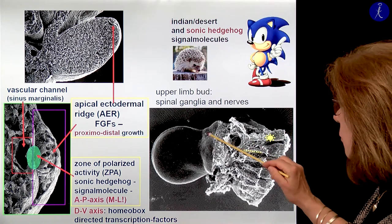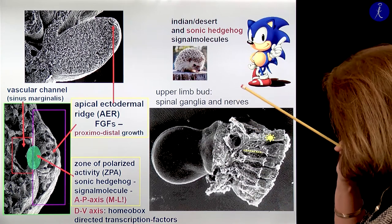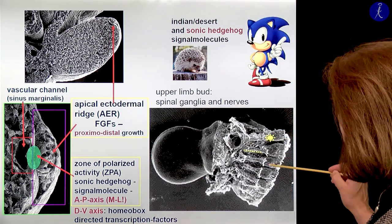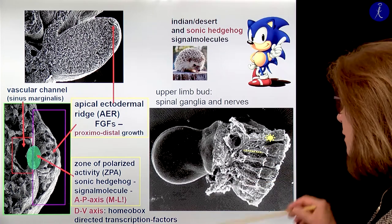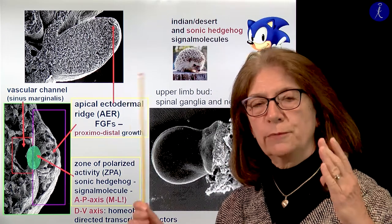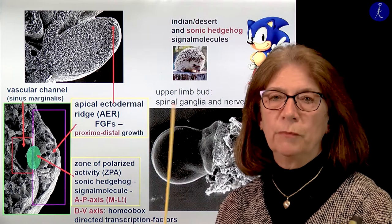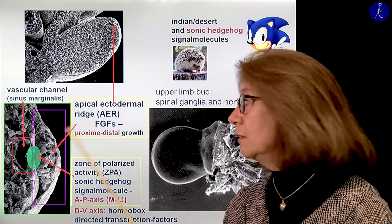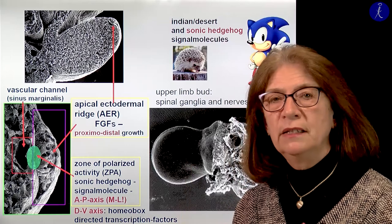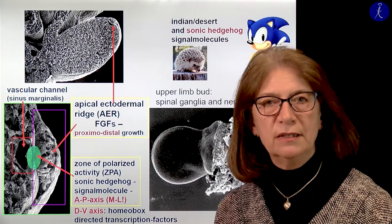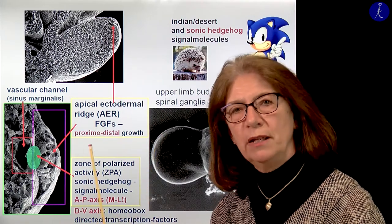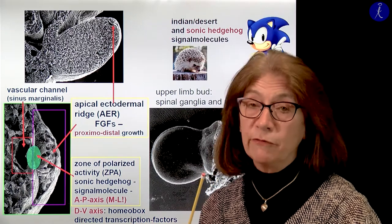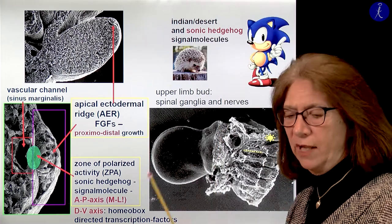Here we see an upper limb bud — a nice round shape removed from the embryo together with the spinal ganglia and spinal nerves: C5, C6, C7, C8, thoracic 1, which will give the brachial plexus. From the very beginning the spinal segments are connected with the developing limbs and they regulate each other's development. If something happens to the limb, like the vascular channel is closed and there is no limb development, then also the appropriate parts of the central nervous system will be underdeveloped, and vice versa.